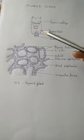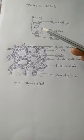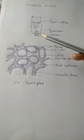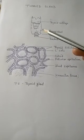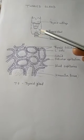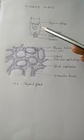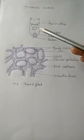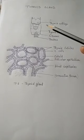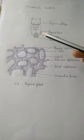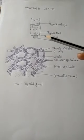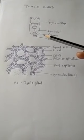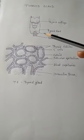On the posterior side of the thyroid gland, parathyroid glands are embedded. These parathyroid glands are four in number and are situated on the posterior surface of the thyroid gland. They are also related to the regulation of calcium levels.